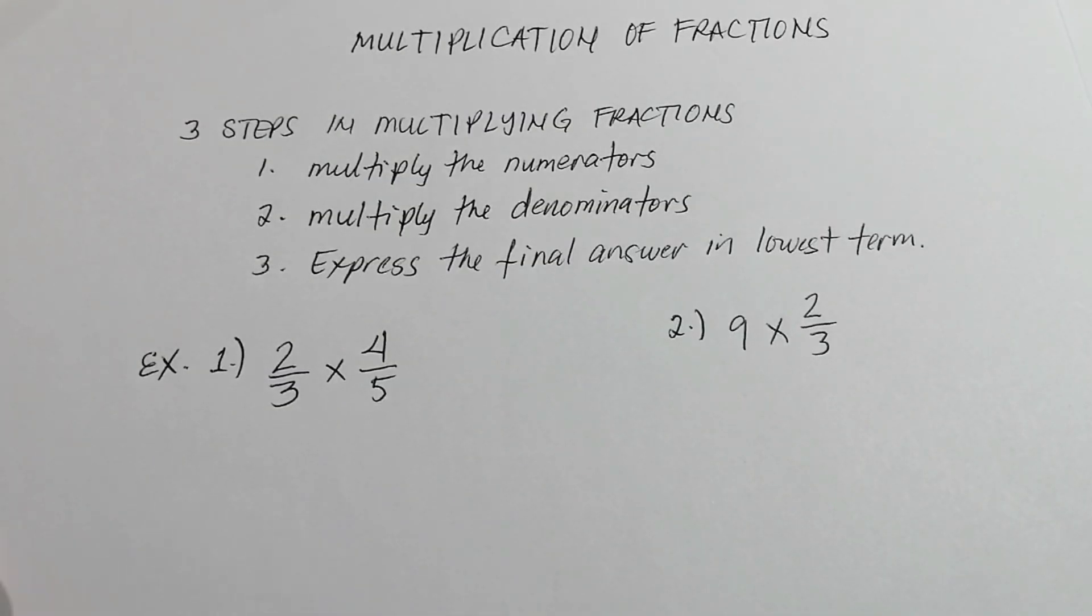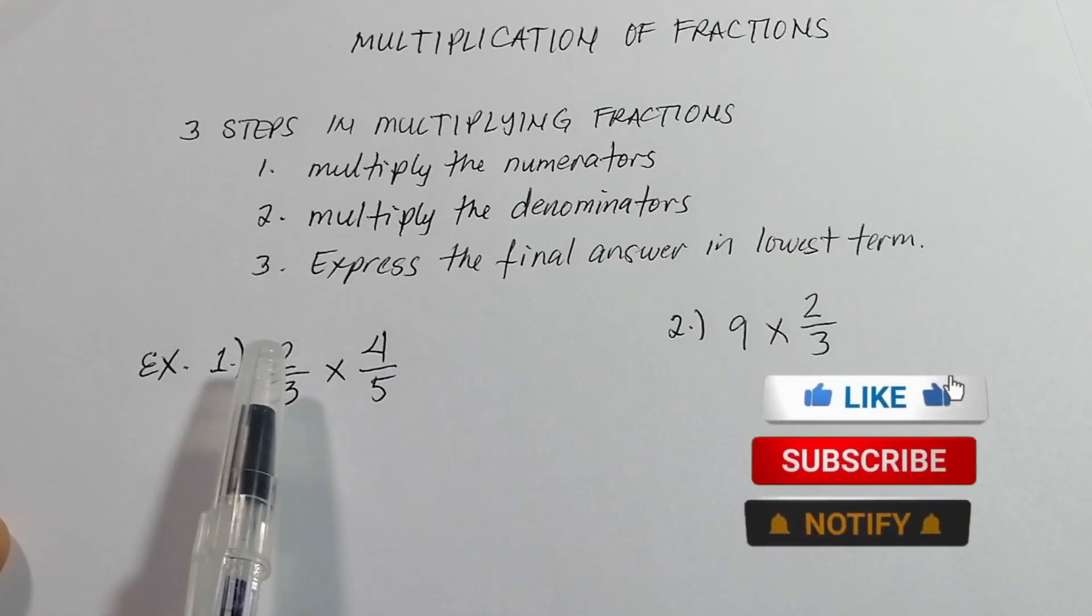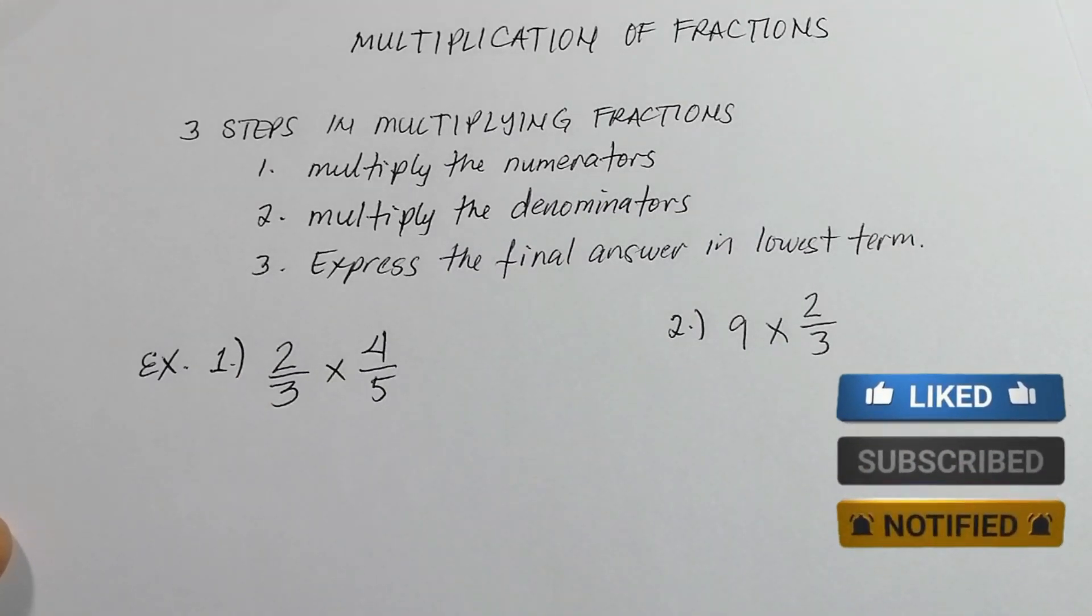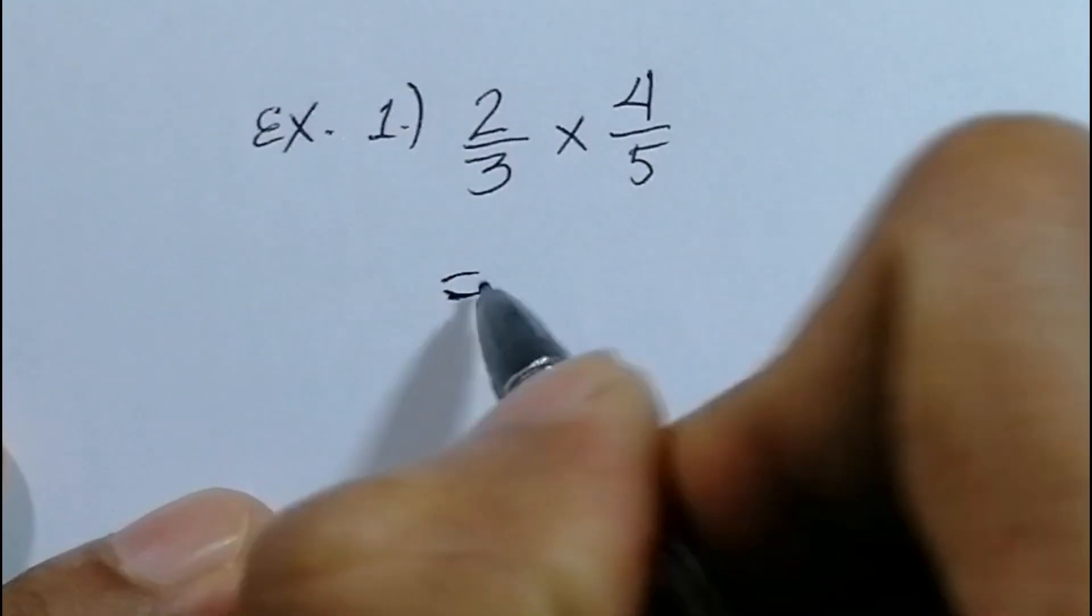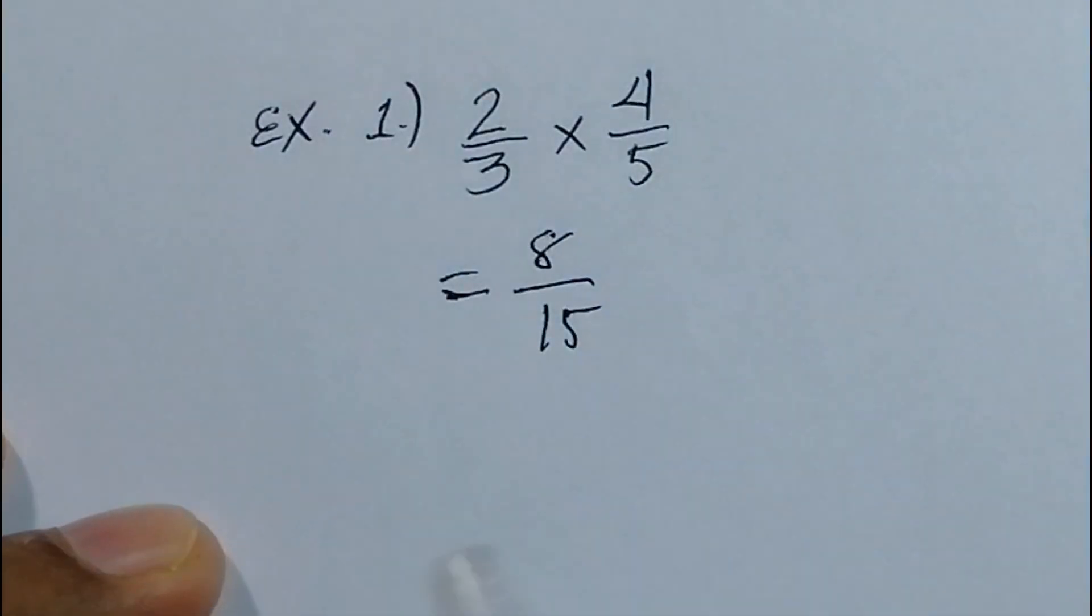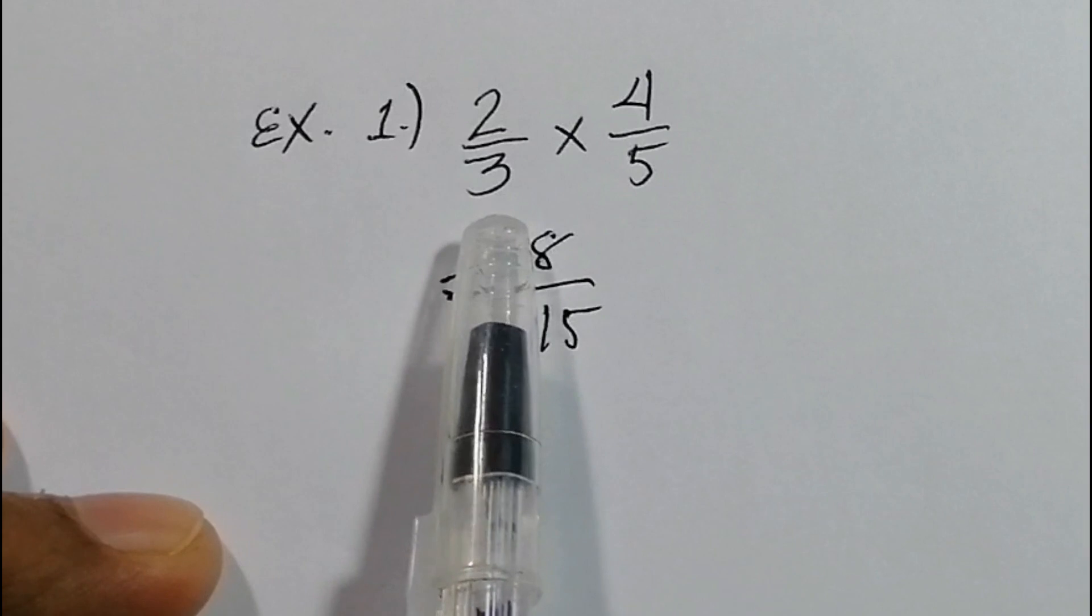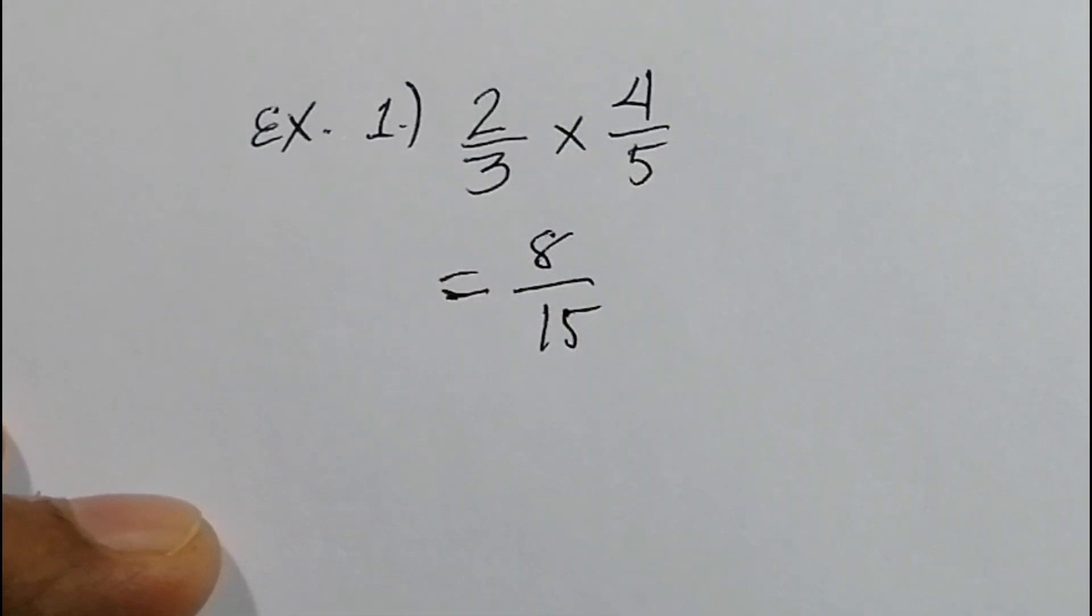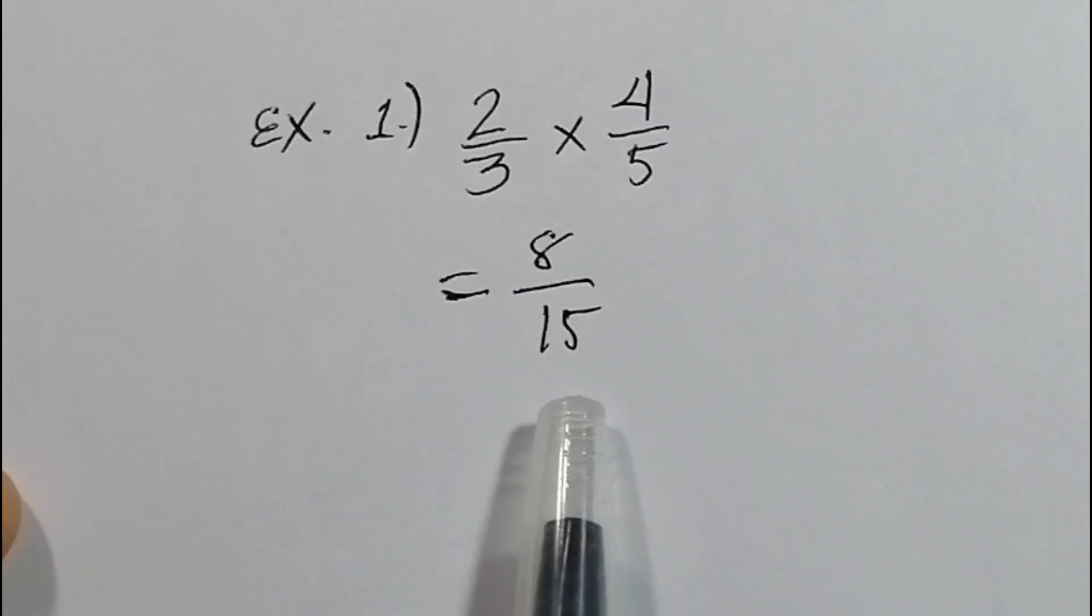Let's begin with number one. We have here two-thirds times four-fifths. So all we gotta do is, as it said, multiply the numerators. Ang gagawin natin dito ay imumultiply lang natin yung numerator sa numerator, denominator sa denominator. Two times four is eight. Three times five is fifteen. So this is the product of two-thirds times four-fifths. Now ang question natin, ang tanong is, pwede ba natin itong i-reduce to lowest term? Anong number ang pwede natin, pwedeng i-divide sa eight at saka fifteen? Meron ba? O di ba wala? So meaning to say, ang final answer natin is eight over fifteen. So this is our answer.